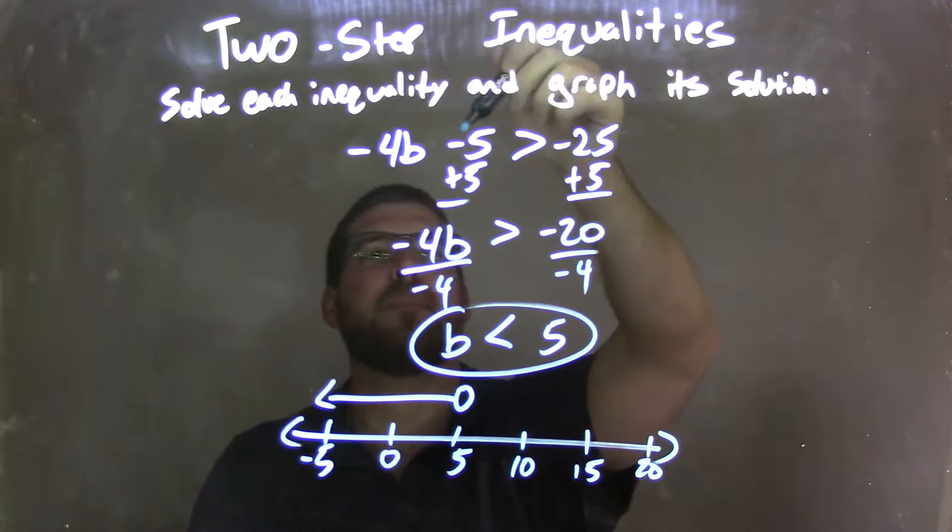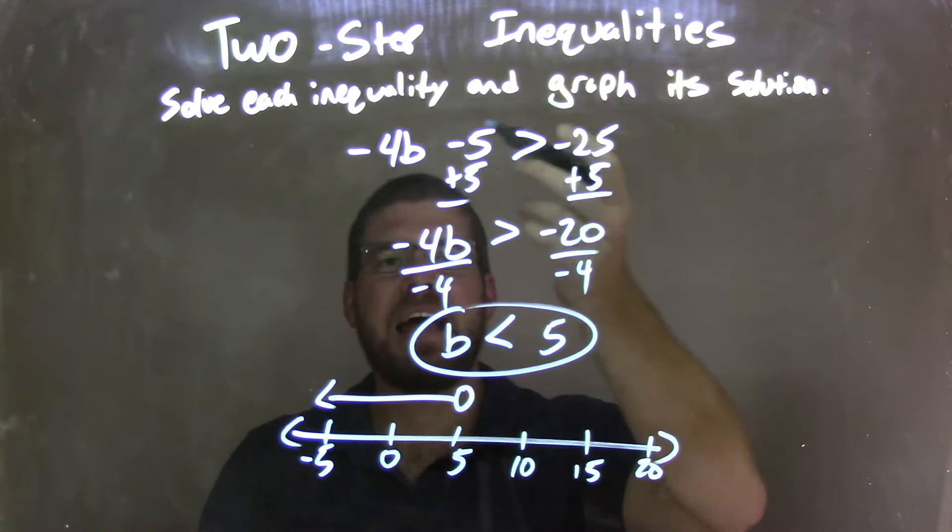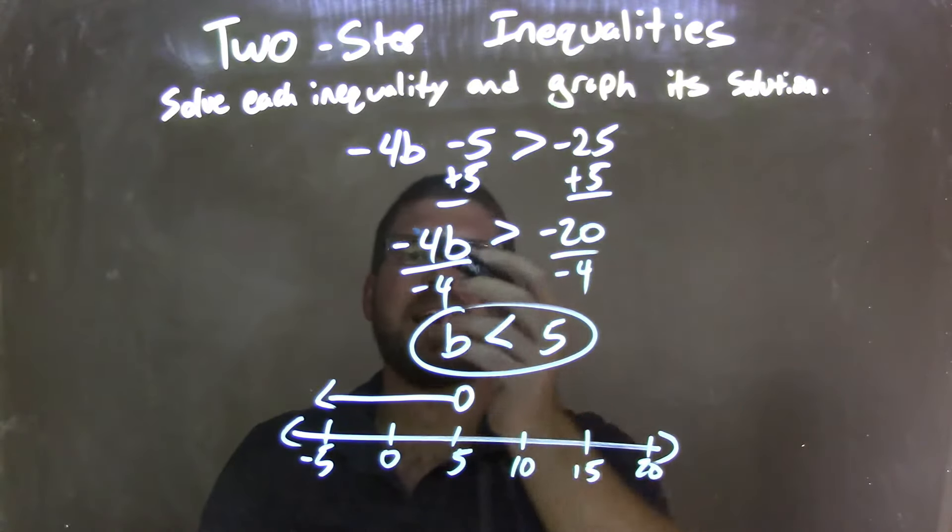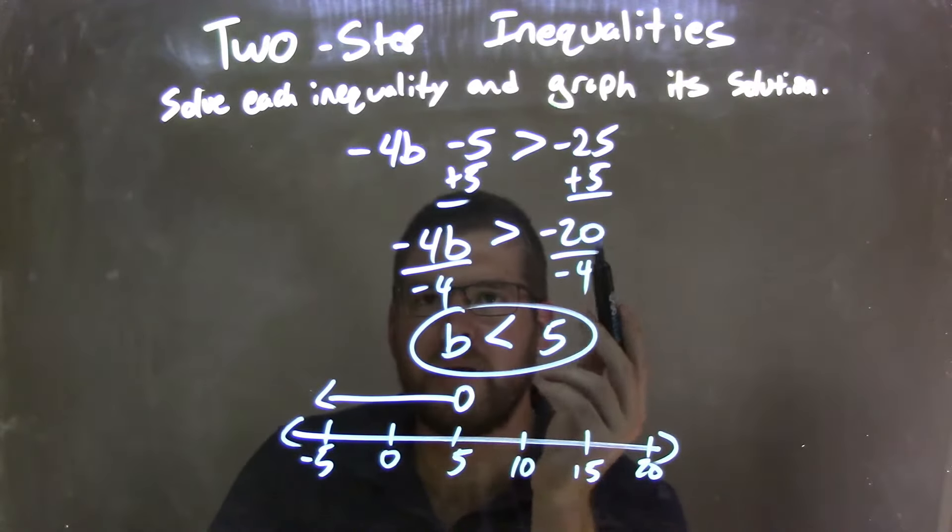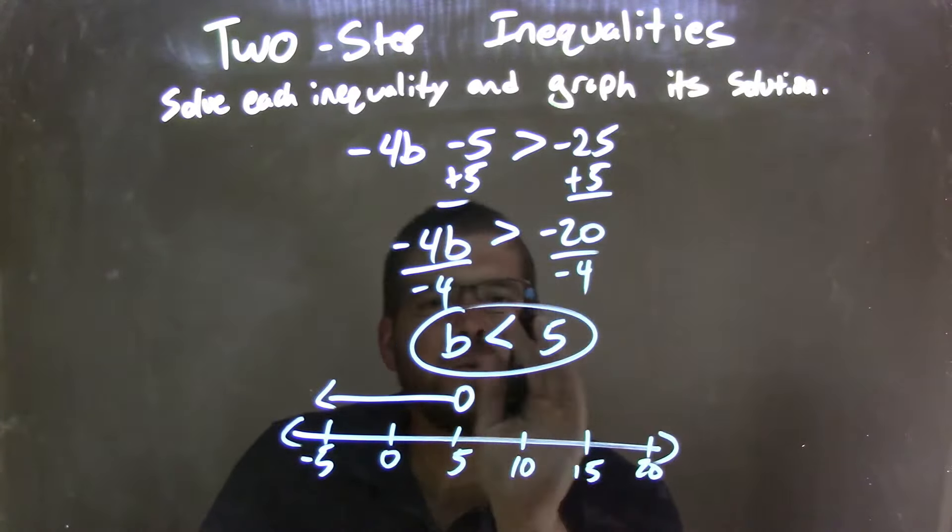So let's recap. We had negative 4b minus 5 is greater than negative 25. I added 5 to both sides, giving me negative 4b on the left, and it's still greater than negative 20 on the right, and then divided by negative 4 on both sides. By doing that, I flipped the inequality from greater than to less than.